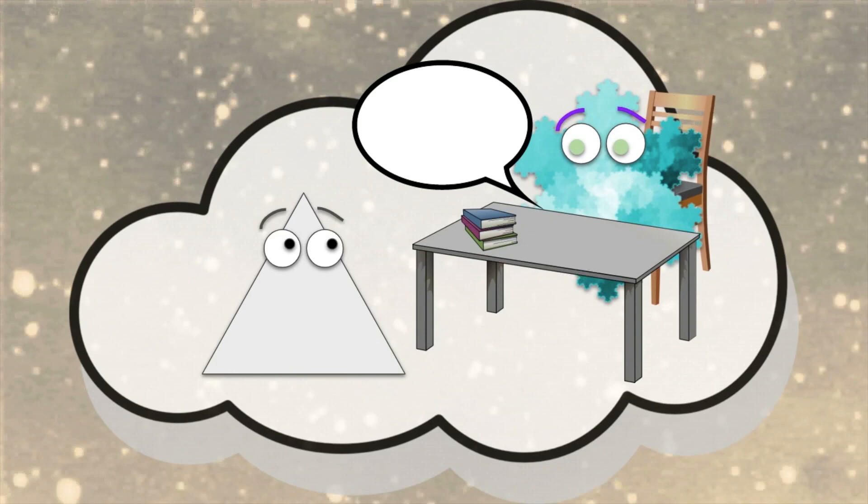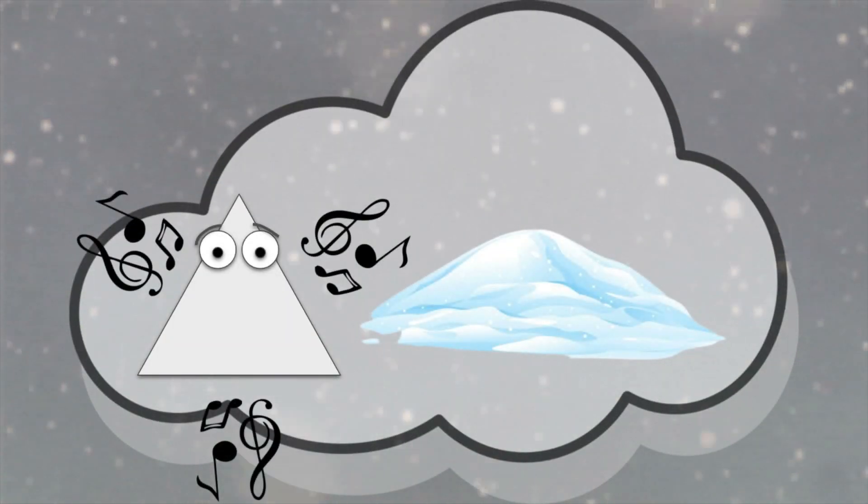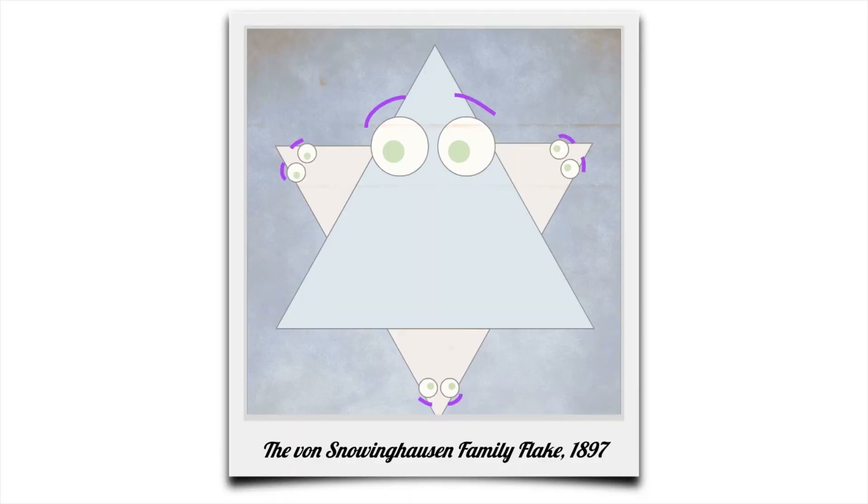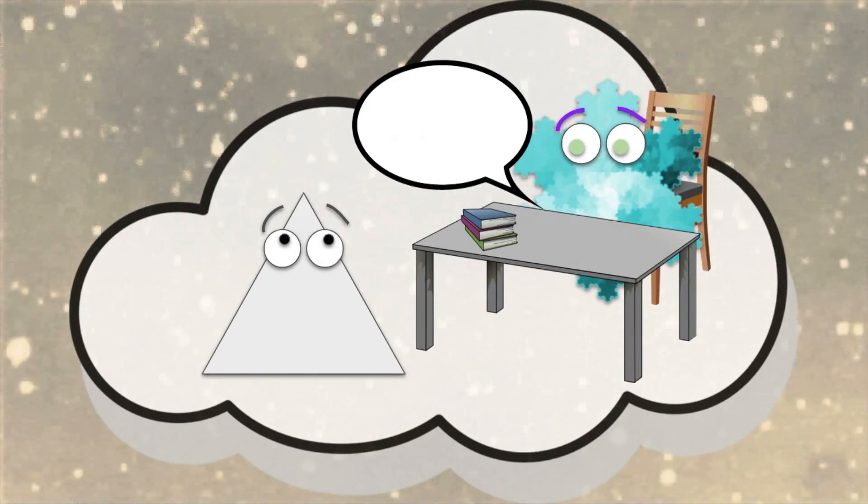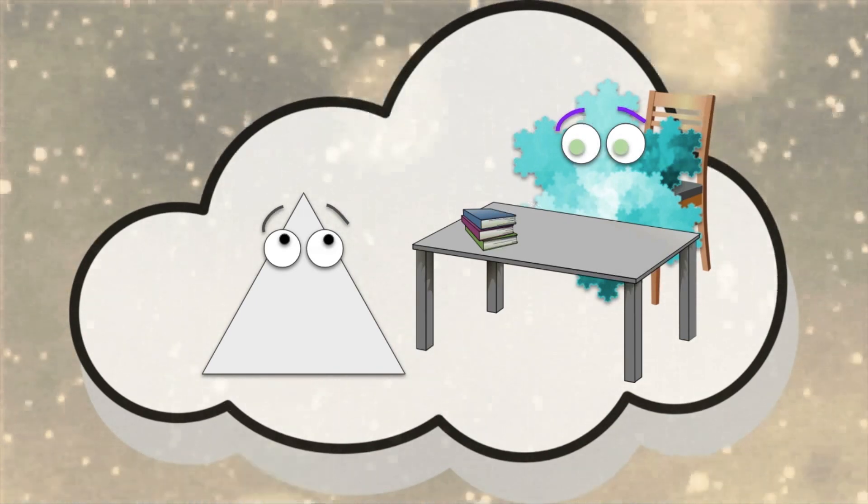Now, when a snowflake wants to start a family, it finds a patch of snow dust and sings the snow serenade. Out of the millions of specks of snow dust, three will hear the serenade and grow into snow babies. Flake families love each other very much. In fact, we love each other so much that we join together into a family flake. When I had my three snow babies, they each attached themselves to one of my sides. Here's a family photo from that time. As you can see, it was hard to get everyone to smile at the same time. Now, here's a little math problem for you, Snowy. After I had my three snow babies, how many sides did our family flake have?